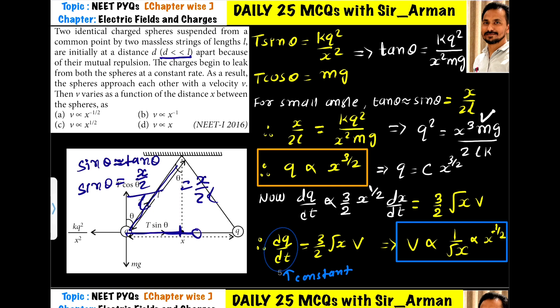So we can say q² is proportional to x³. Taking the square root on both sides, q is proportional to x^(3/2).